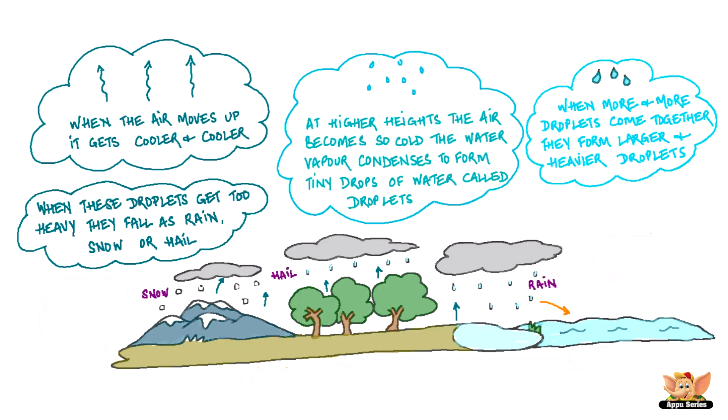So the land water and the water let out by plants through transpiration goes into air by evaporation and forms clouds which fall back on earth as rain, snow or hail.